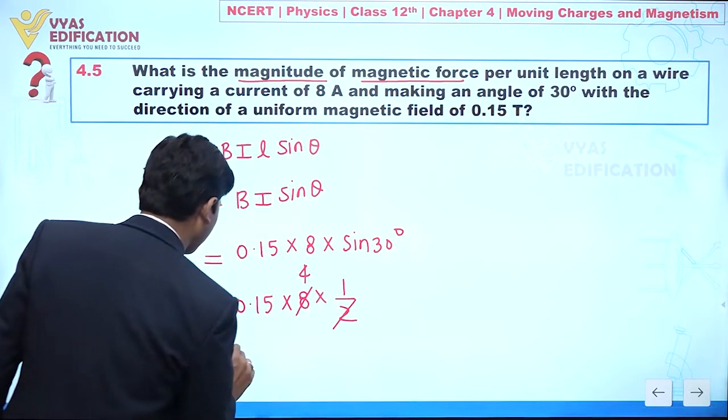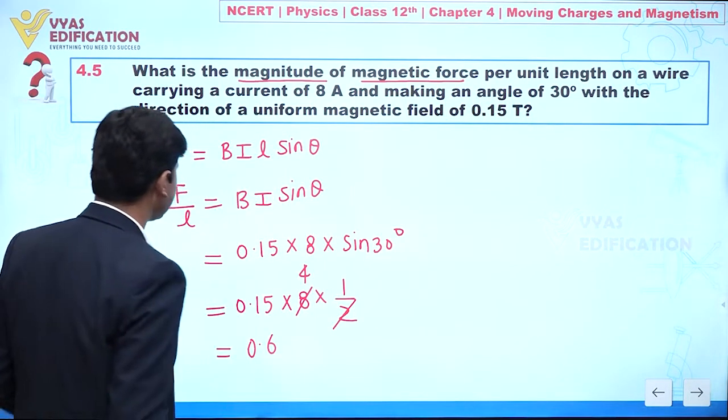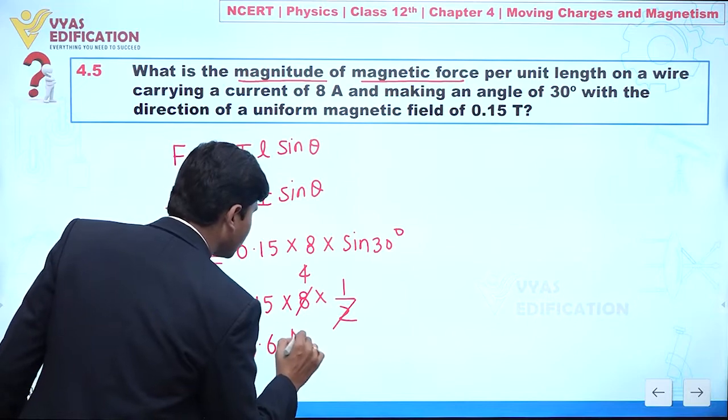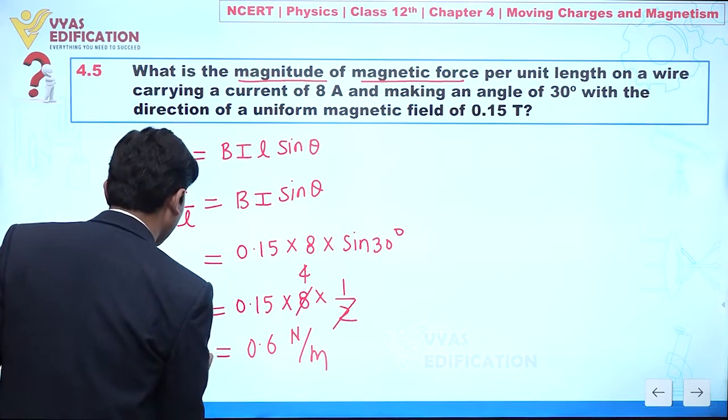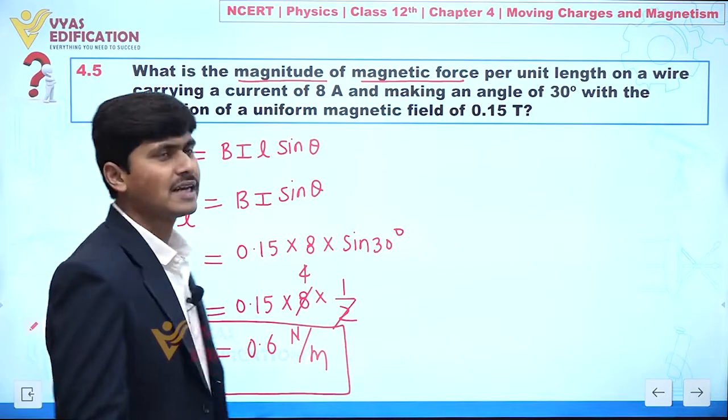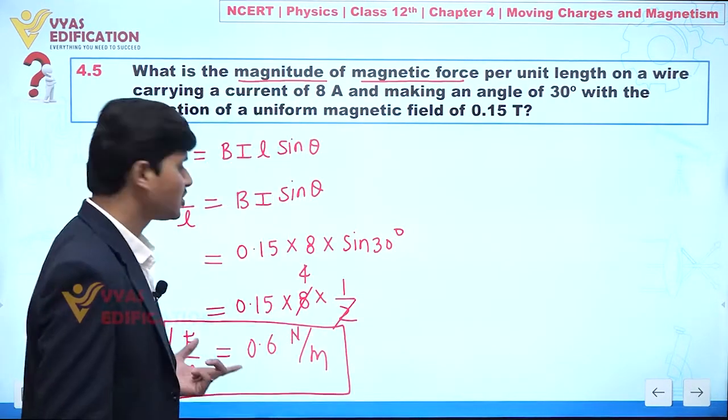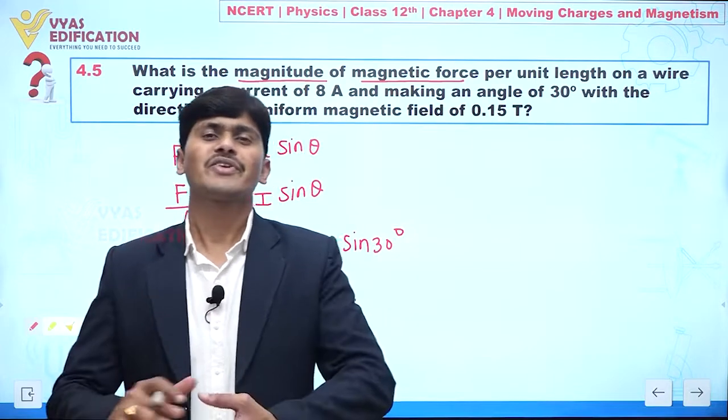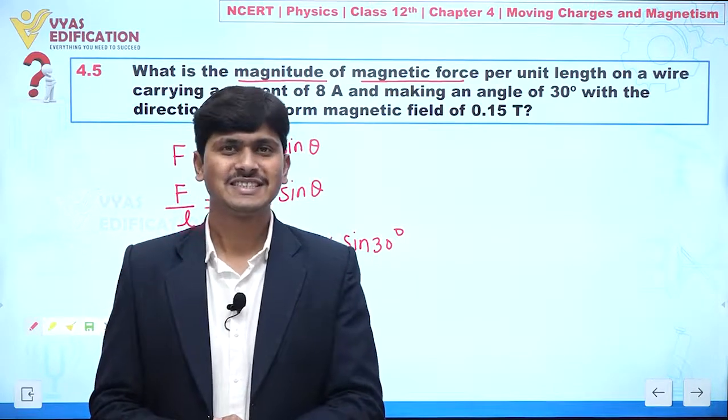So we can say this is 4, so from here you can say this is 0.6 newton per meter. So from here we can say force per unit length is 0.6 newton per meter. This is all about this question.